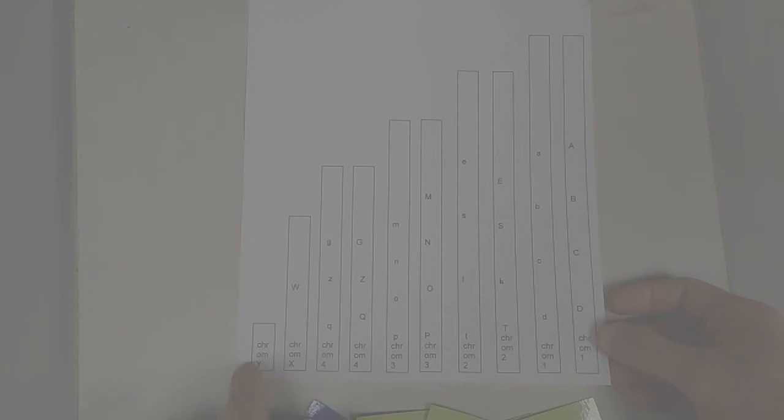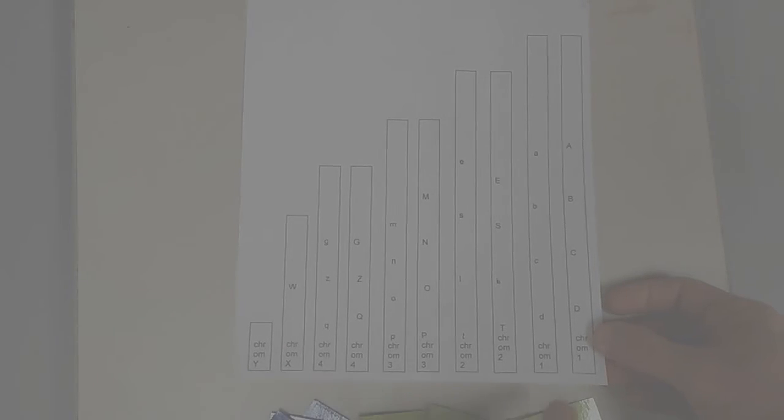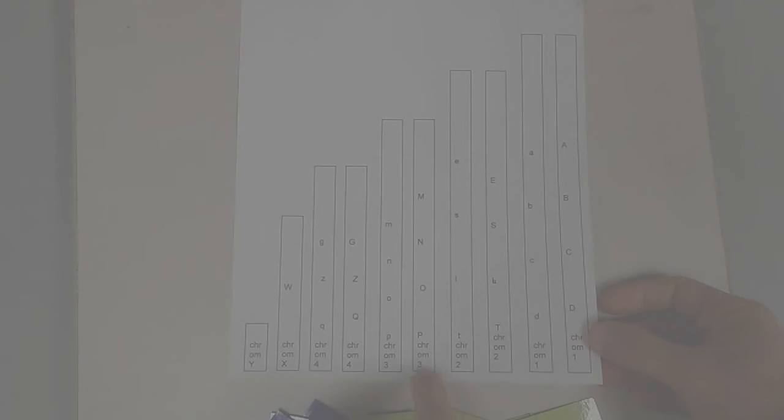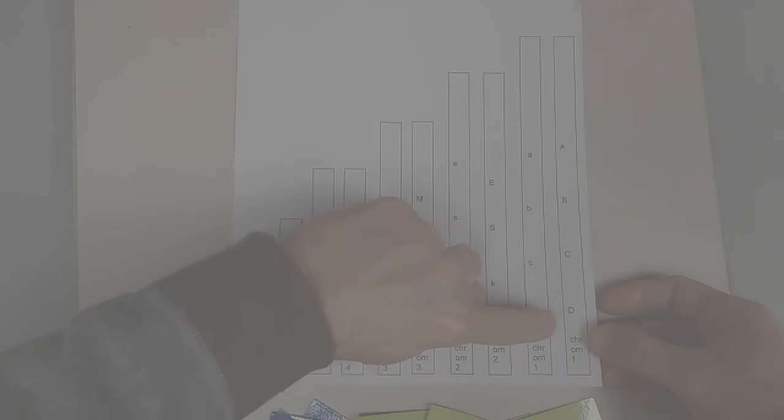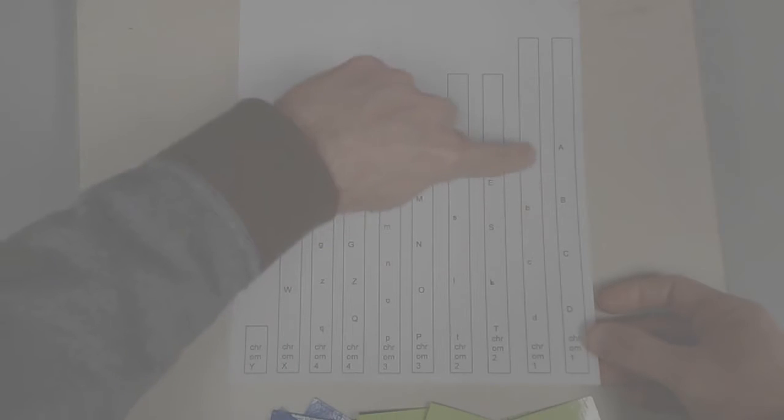Neither of these will be in multiple pieces, but all the rest of the chromosomes—here we can see chromosomes 1, 2, 3, and 4—each have multiple letters. So this one has a sequence A, B, C, D down this chromosome.